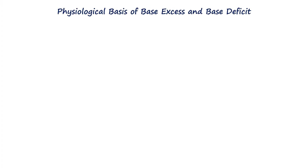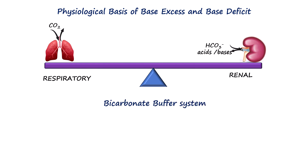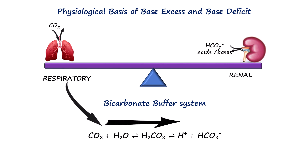The two main systems involved in acid-base regulation are the respiratory and renal systems. The respiratory system controls CO2, a volatile acid, and the renal system regulates bicarb and other non-volatile acids and bases. The two components are linked by the bicarbonate buffer system that occurs particularly in RBCs, given by this reaction. This reaction is reversible, meaning it can kick start from either the CO2 side, which is the respiratory component, or from the bicarb side, the metabolic component.